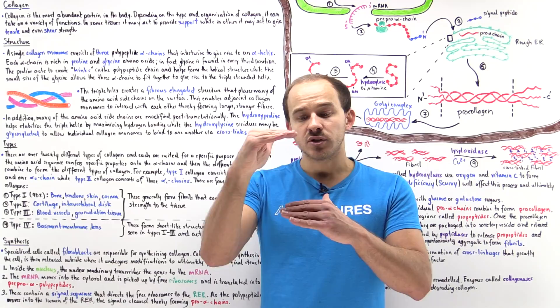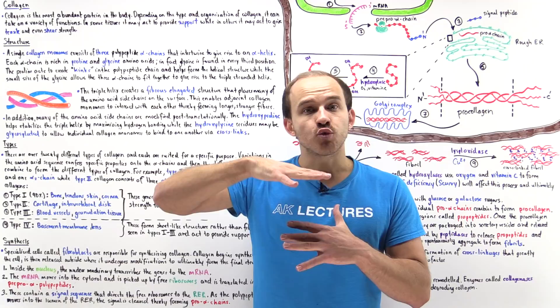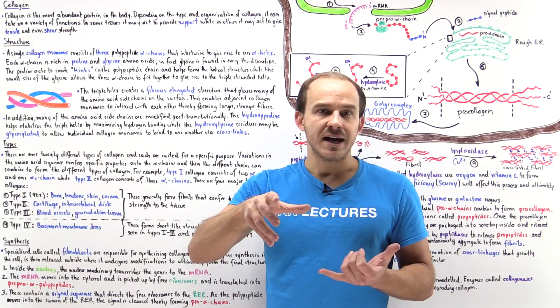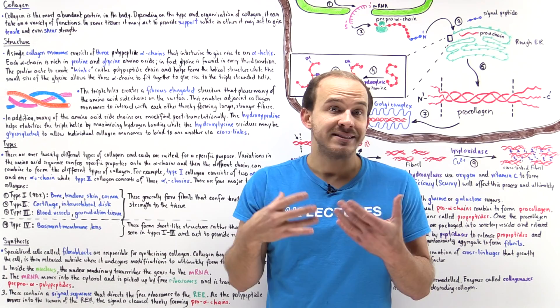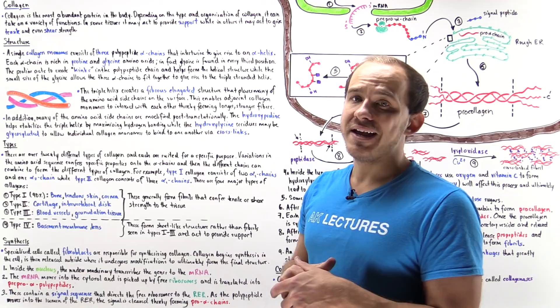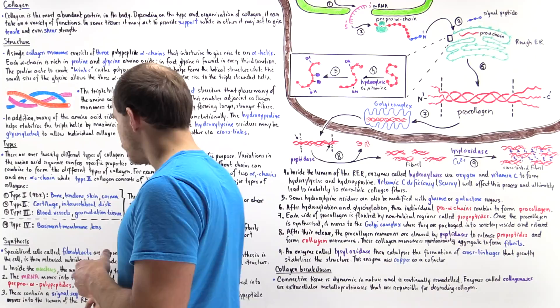For example, collagen in the extracellular matrix actually creates these sheet-like structures, and that allows the cells to actually rest on the extracellular matrix — so here the collagen functions for support, to support the cells. The collagen in the bone organizes in such a way to actually give bone shear strength, while the collagen in tendons organizes in another way to actually give it tensile strength. So depending on the type and the way the collagen organizes, it serves many different functions.